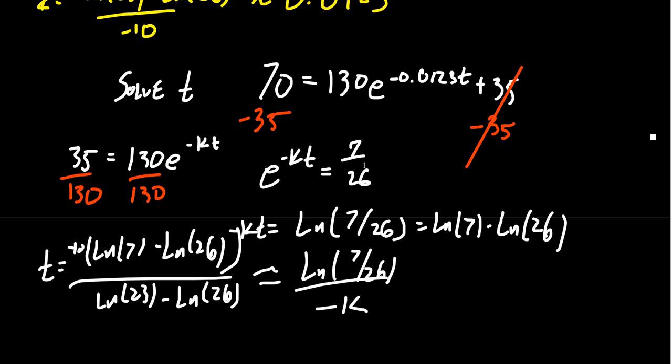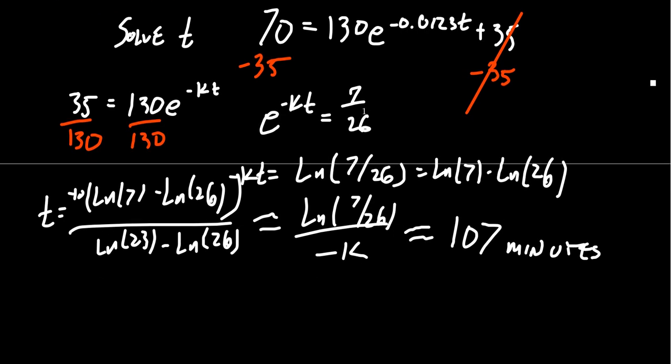You could also have done just the natural log of seven over 26 divided by your K value from before, the negative K that was appropriate as well. But when we put this in our calculator, rounding to the nearest minutes, we're going to get 107 minutes, which when you have that timeframe, you usually probably want to insert hours into there. 60 minutes in an hour. So this would be one hour and 47 minutes.